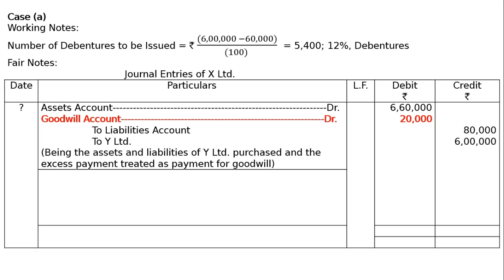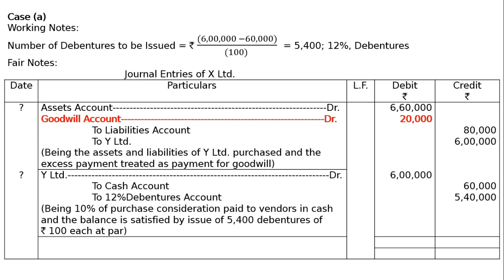Next entry is payment for purchase consideration. Y Limited account debited Rs. 6,00,000; to Cash account Rs. 60,000 (10% paid in cash); and to 12% Debentures account Rs. 5,40,000. Narration: being 10% of purchase consideration paid to vendors in cash and the balance satisfied by issue of 5,400 debentures of Rs. 100 each at par. Journal totals: Rs. 12,80,000 on both columns.